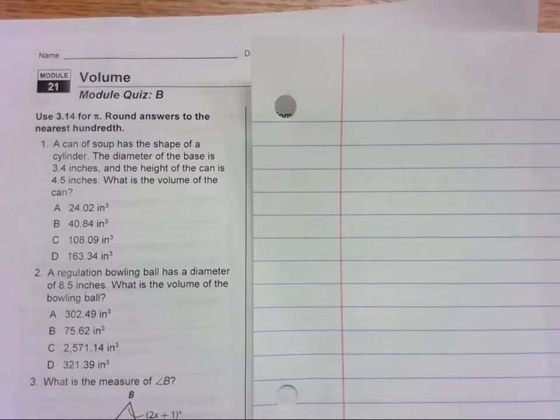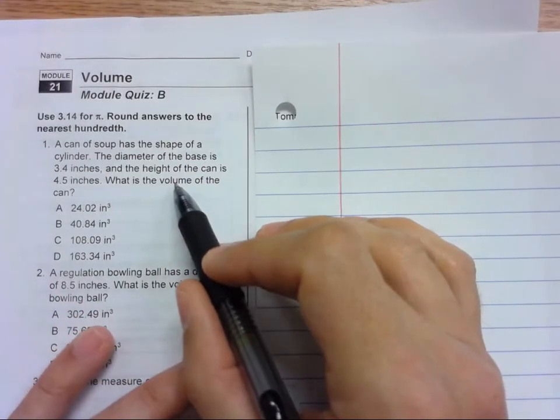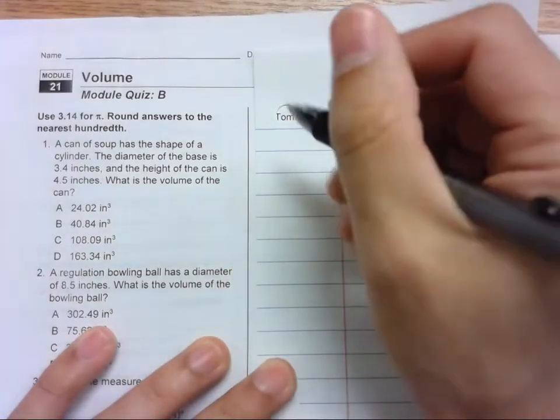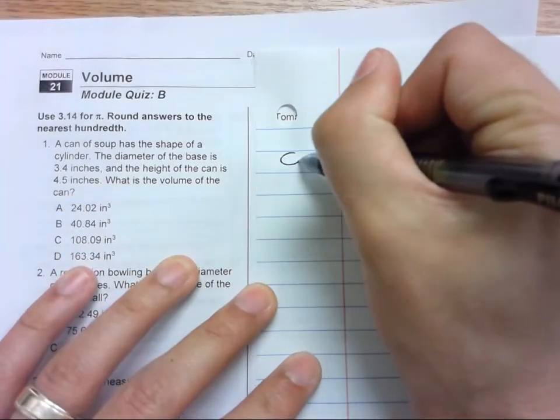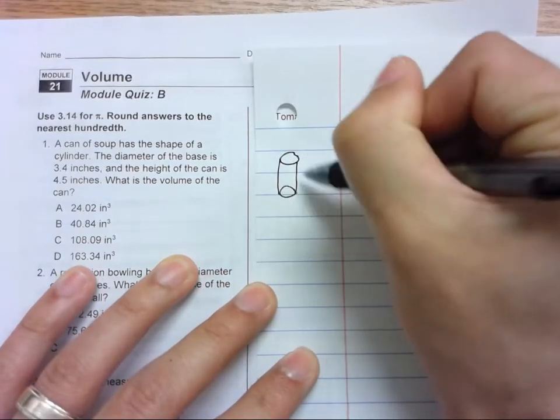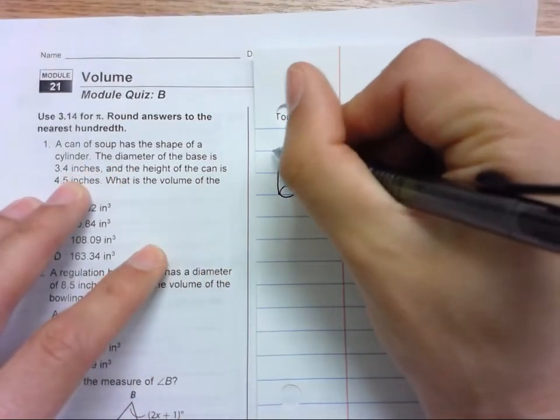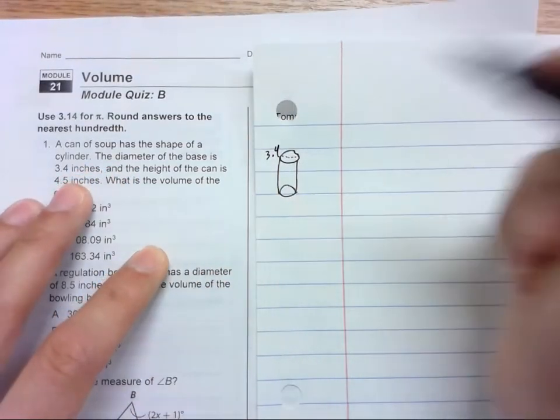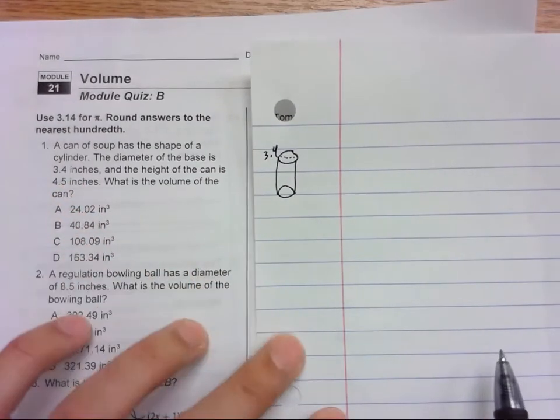Module 1 study guide, looking at number one. A can of soup has the shape of a cylinder. The diameter of the base is 3.4 inches and the height is 4.5 inches. What's the volume? So we have a cylinder. We know that the diameter is 3.4, so we want to find the volume.